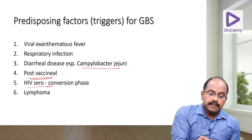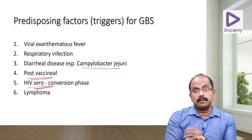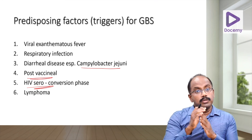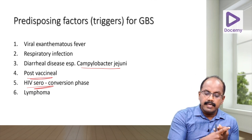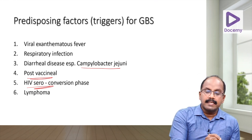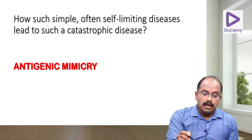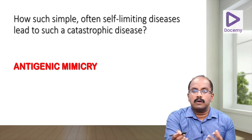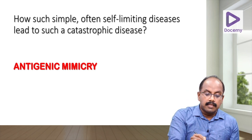Other triggers include HIV infection during the seroconversion phase and lymphoma, which can manifest as GBS. When a patient presents with GBS, consider underlying diseases such as HIV, lymphoma, recent vaccination, or recent diarrheal or respiratory illness. It is important to analyze how these often self-limiting diseases can lead to a catastrophic, potentially fatal disease like GBS.